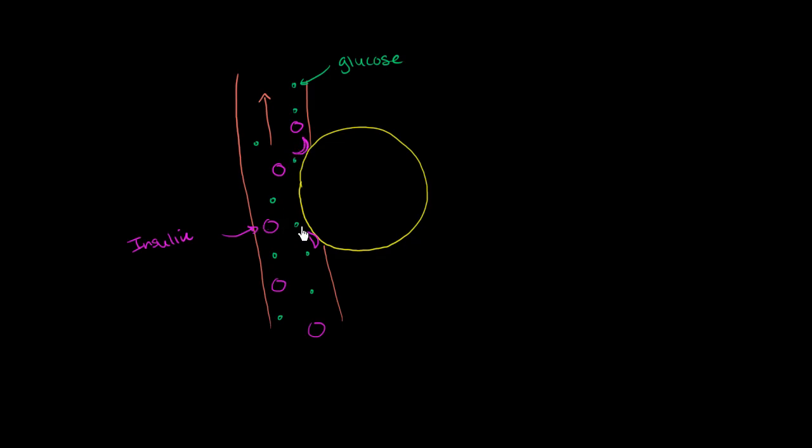What happens is, in order for the glucose to be taken up by the cell, insulin has to attach to these receptors, which unlocks the channels for glucose. In order for the glucose to go in, insulin has to bind to the insulin receptors. And then once that happens, then the glucose can be taken up by the cell.